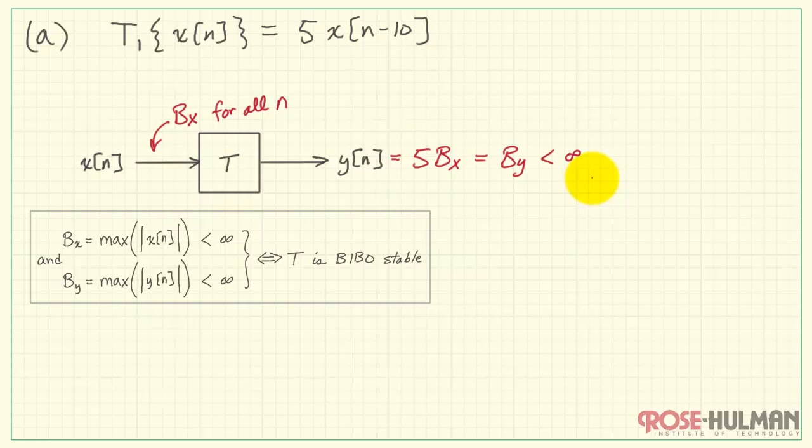BX is finite. 5 times BX is also finite. Therefore, we conclude that T1 is bounded input, bounded output, stable.